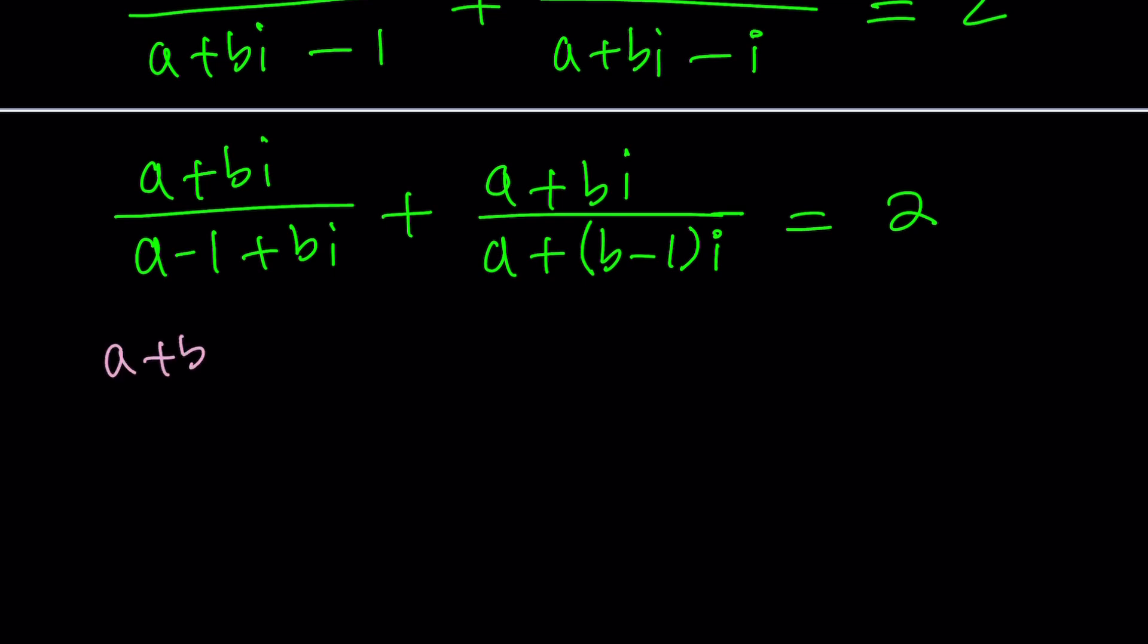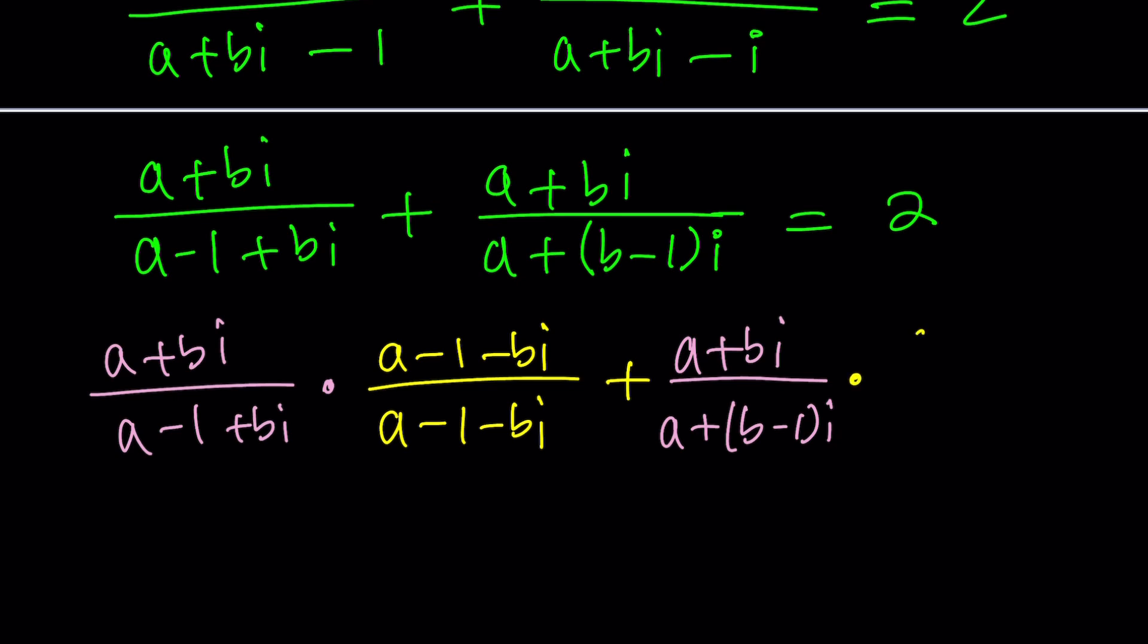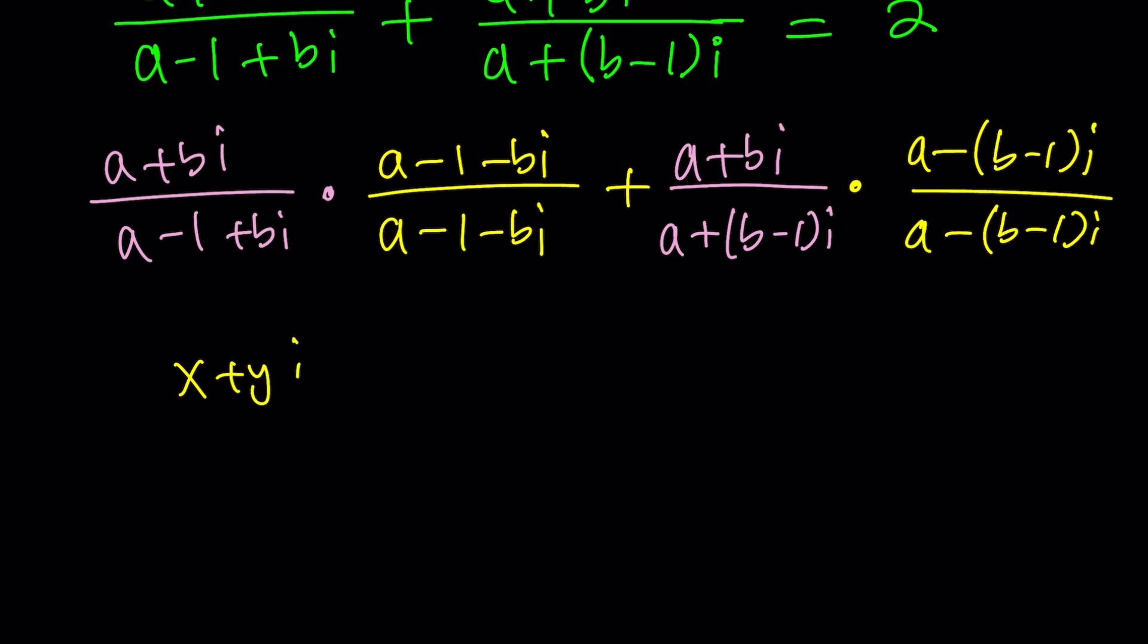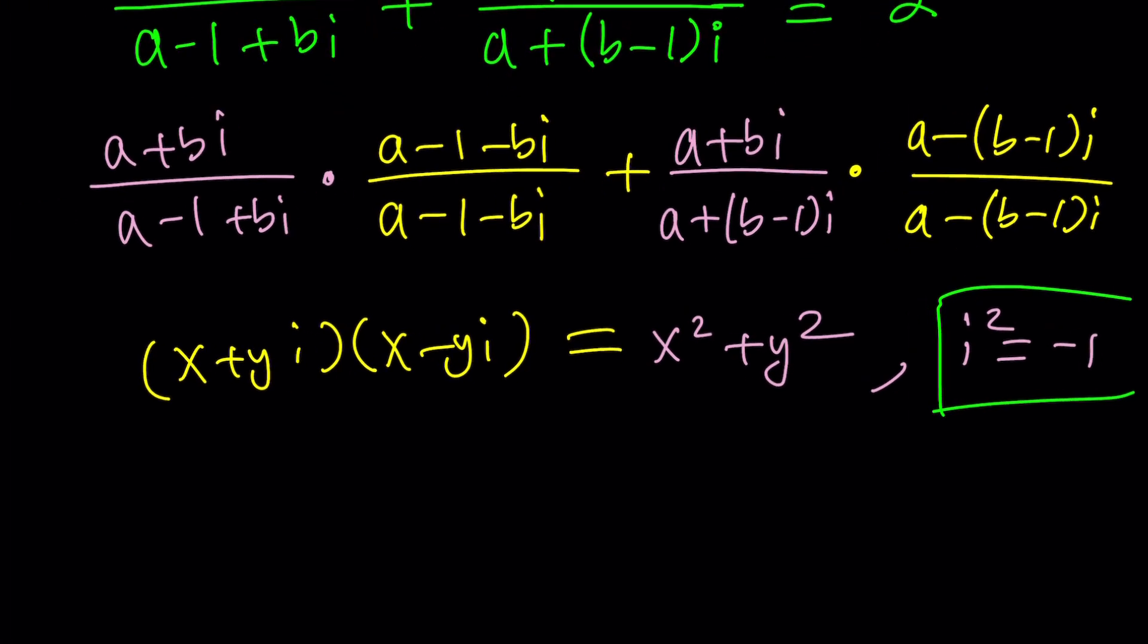We're going to take this number and multiply by A minus 1 minus B I both the numerator and the denominator, and then we're going to do the same thing with this number. So it's going to look like this. We're going to multiply by A minus 1 minus B I. Notice that we are only negating the imaginary parts. And when you multiply x plus y I and x minus y I, you get x squared plus y squared. From difference of two squares, you get a sum of two squares because I squared is equal to negative 1. Very important to know. Something that you should never forget.